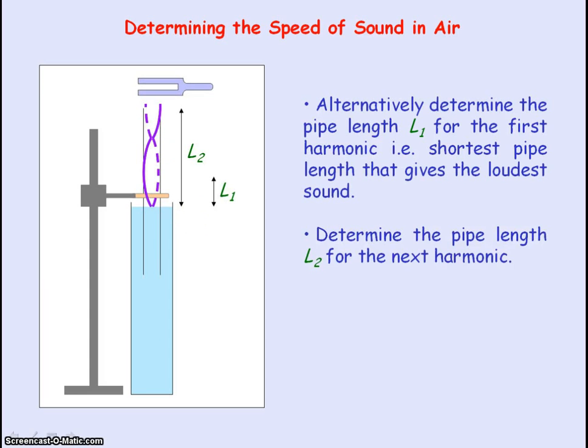We will increase the pipe length until we get the next harmonic, the length that will give us the next loudest sound so that an anti-node is occurring again at the end of the pipe. This pipe length will equal L2.